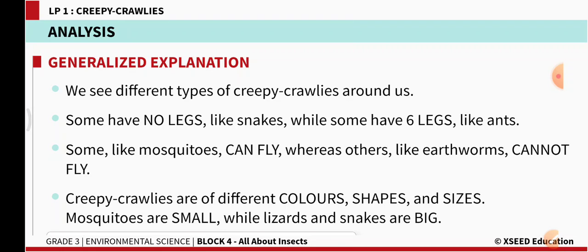We see different types of creepy crawlies around us. Some have no legs like snakes, while some have six legs like ants. Some have fewer legs, some have more legs, and some have no legs at all.